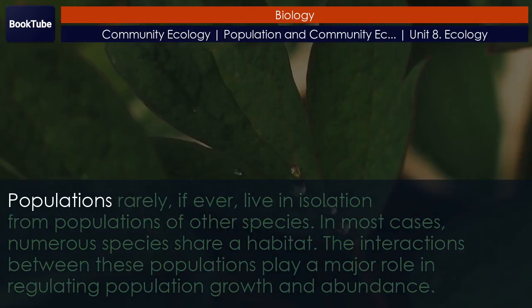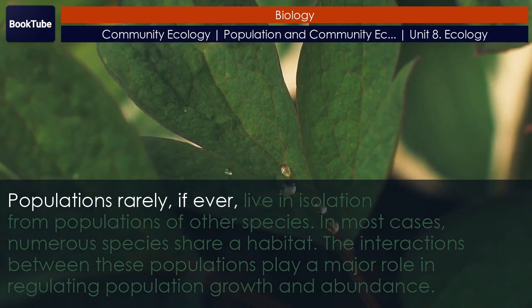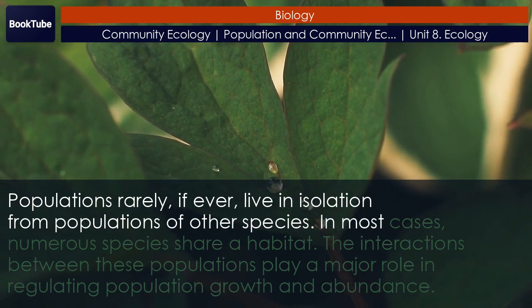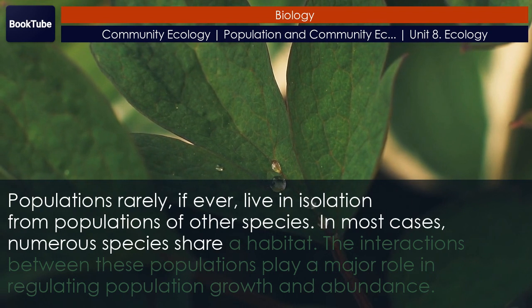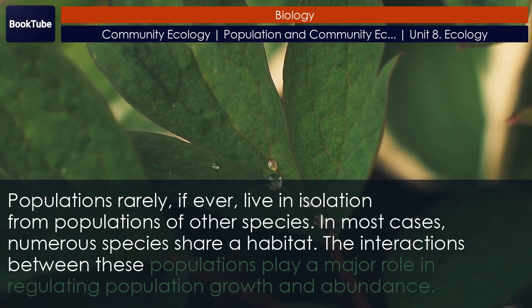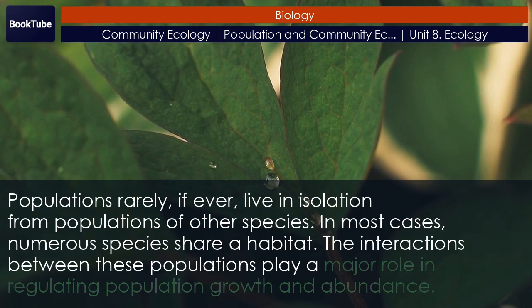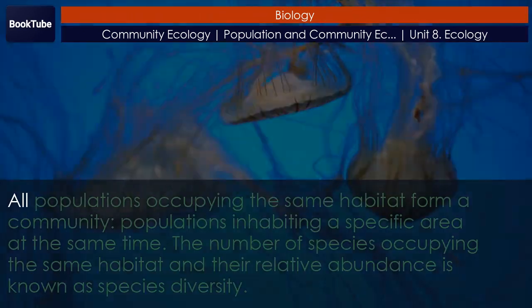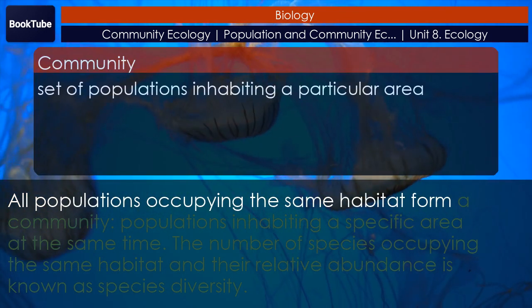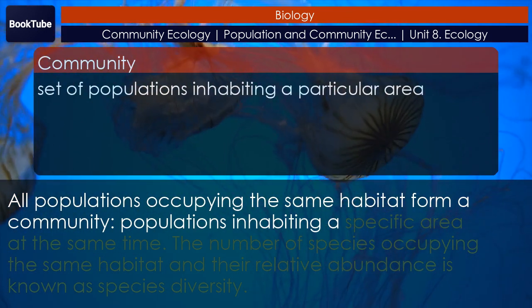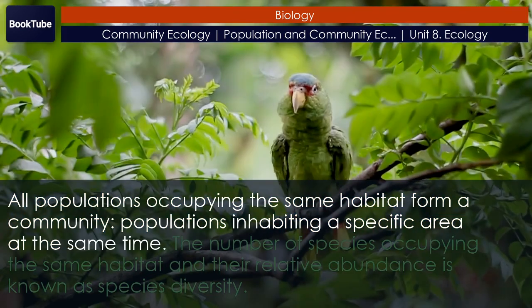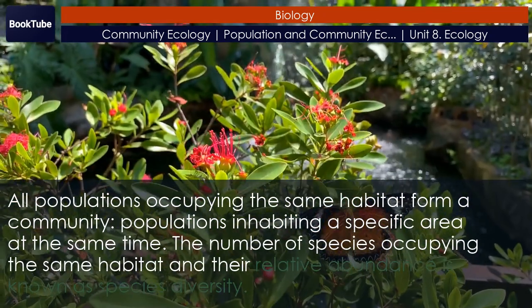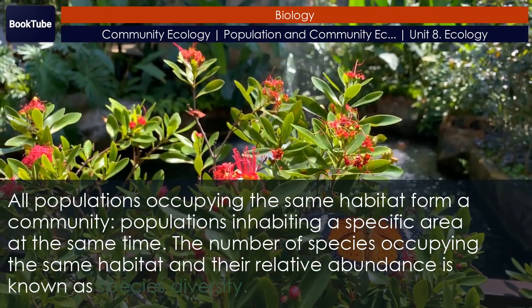Community ecology. Populations rarely, if ever, live in isolation from populations of other species. In most cases, numerous species share a habitat. The interactions between these populations play a major role in regulating population growth and abundance. All populations occupying the same habitat form a community — populations inhabiting a specific area at the same time. The number of species occupying the same habitat and their relative abundance is known as species diversity.